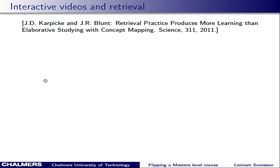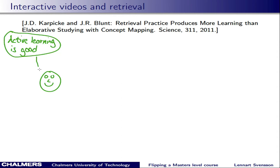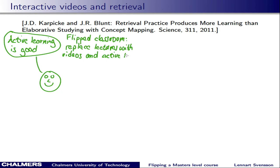Karpicke and Blunt published an interesting study in Science in 2011, where they compared how much students learned by simply trying to retrieve the content in a text from memory. Students were asked to read a text and then try to recall what the text was about. If you compare this to this video, you might recall that active learning is good and that flipped classroom is about replacing lectures with videos and active learning in class.